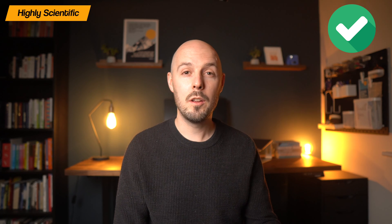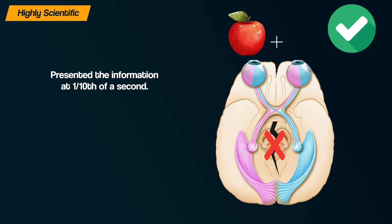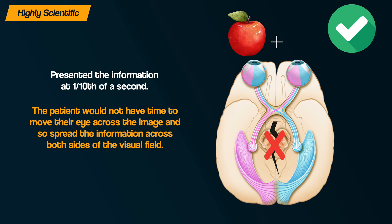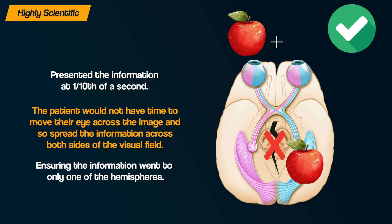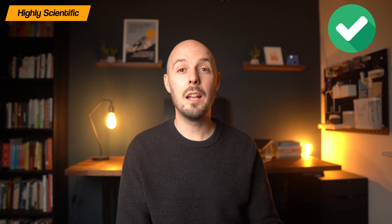Now let's evaluate the research into hemispheric lateralisation. One of the main strengths of split-brain research is how scientific it is — the experiments had a remarkable level of control over procedures. This can be seen in how highly specialised and standardised those procedures were. For example, Sperry presented information at one tenth of a second so that the split-brain patient would not have time to move their eye across the image, ensuring the information went to only one hemisphere. This control and standardisation allowed them to replicate the research many times and carry out different variations.